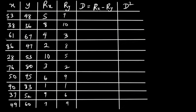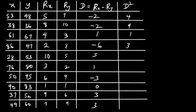The next thing to do is find d, which is simply the difference between Rx and Ry. So: 5 minus 7 is negative 2, negative 2, 8 minus 10, 4 minus 3 is 1, negative 6, 5, 1, negative 3, 0, 3, and lastly 3. Finding d squared, these values are: 4, 4, 1, 36, 25, 1, 9, 0, 9, 9.